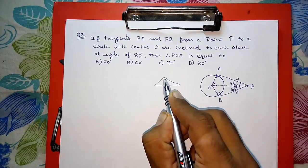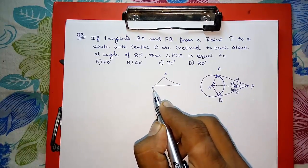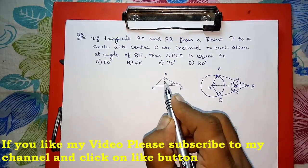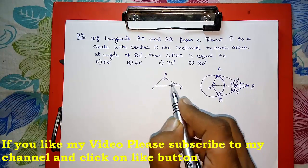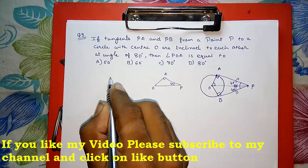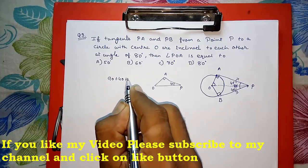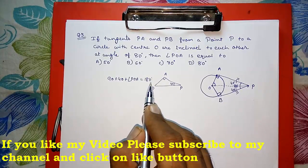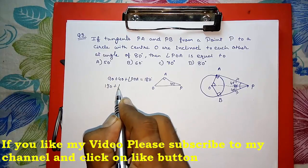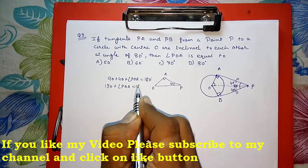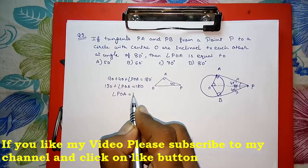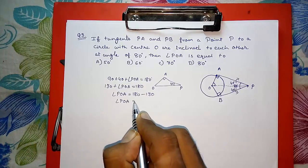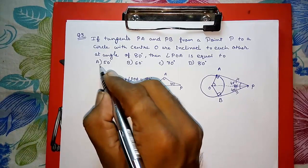Now we have triangle AOP with vertices A, O, and P. Angle OAP = 90°, angle APO = 40°. Using the angle sum property of a triangle: 90° + 40° + angle POA = 180°, so 130° + angle POA = 180°, therefore angle POA = 180° − 130° = 50 degrees.